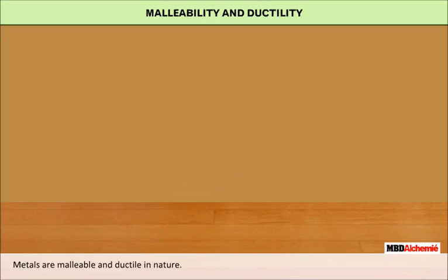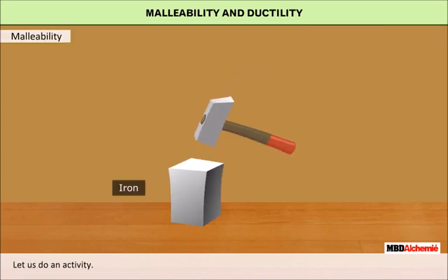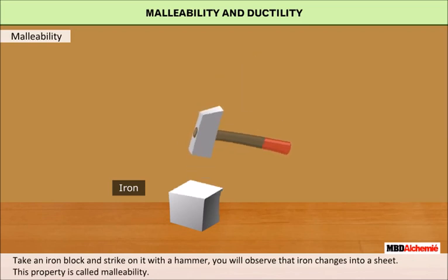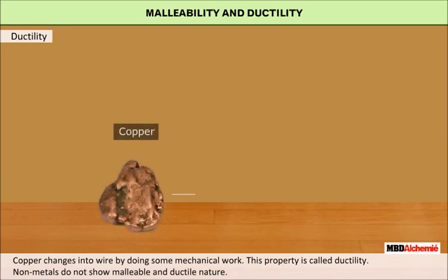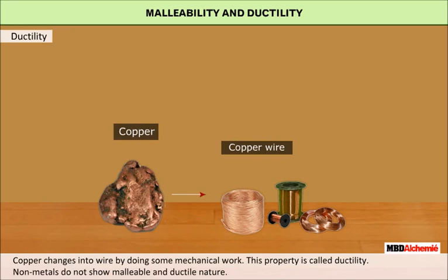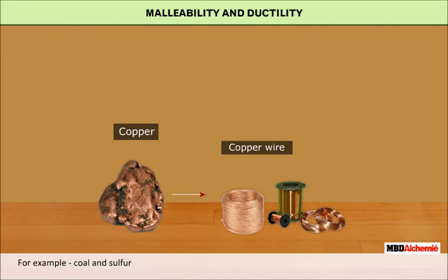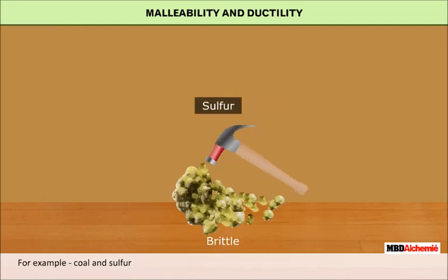Metals are malleable and ductile in nature. Take an iron block and strike on it with a hammer. You will observe that iron changes into a sheet — this property is called malleability. Copper changes into wire by doing some mechanical work — this property is called ductility. Non-metals do not show malleable and ductile nature; examples are coal and sulfur.